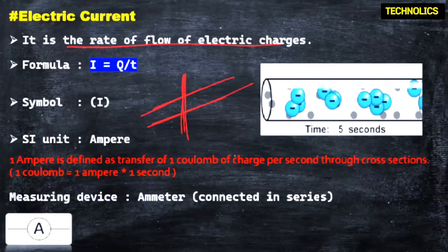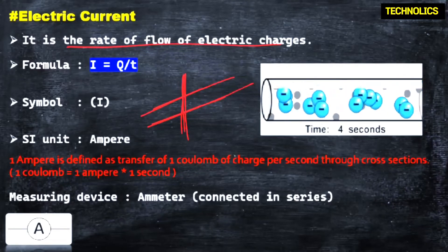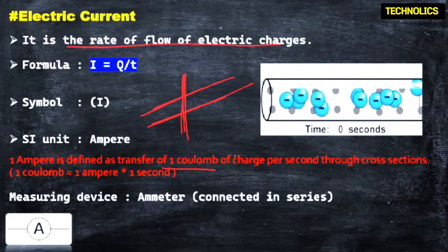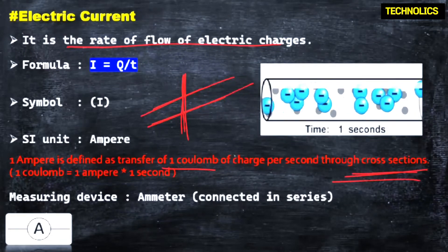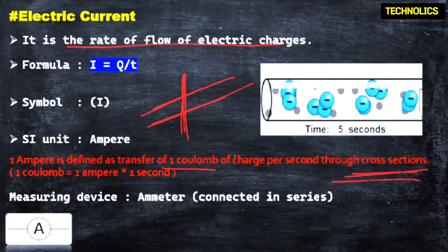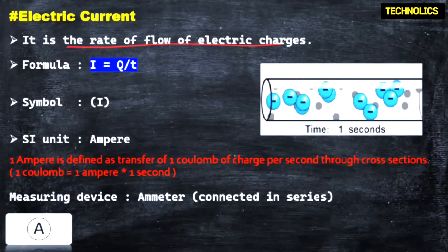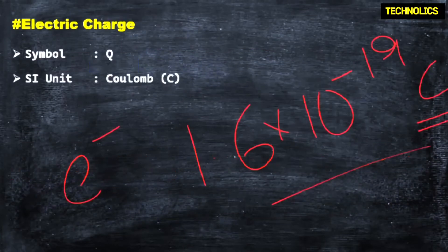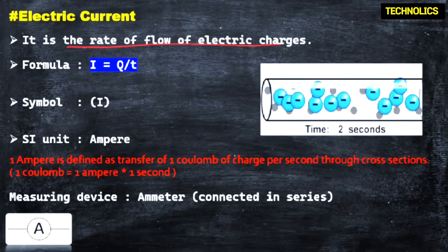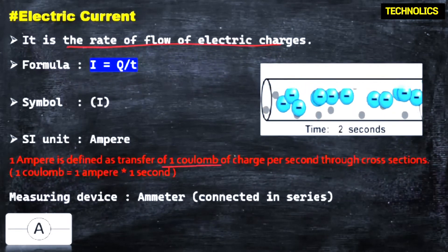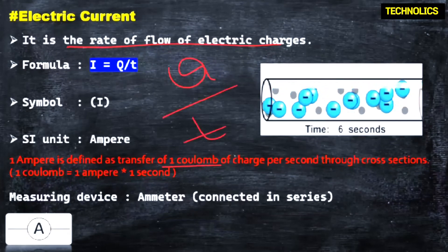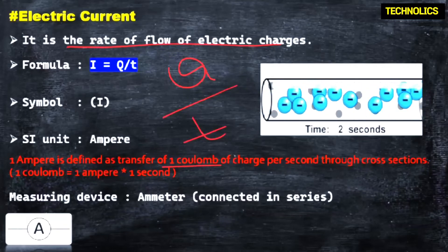The symbol for current is I, and its SI unit is ampere. One ampere is defined as the transfer of 1 Coulomb of charge per second through a cross-sectional area. So 1 Coulomb equals 1 ampere into 1 second. The formula is: I is equal to Q by T, where Q is electrical charge and T is time. The flow of charges per unit time is electrical current.